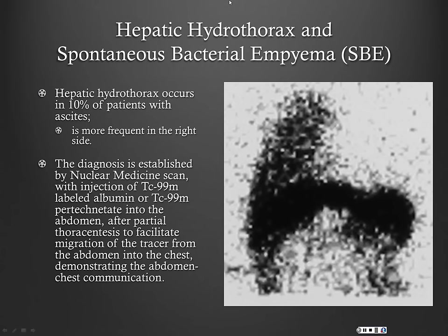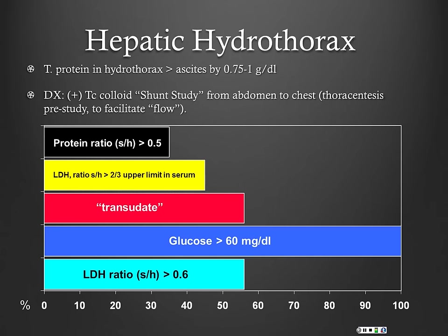This is a nuclear medicine scan where radiolabeled technetium is injected into the peritoneum to see if it communicates with the pleura. If the patient has large-volume pleural fluid, you'll need a thoracentesis first to reduce that volume, because you need some room for the tracer to get into the pleural cavity. You may need to ask your radiologist to perform a thoracentesis before the shunt study.